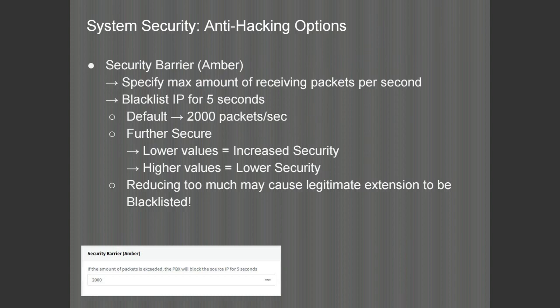Moving on to the amber security barrier, you will be able to define the maximum amount of packets per second coming in from a particular IP to prevent flooding. By default it is 2,000 packets per second, and once this threshold has been exceeded, it will blacklist an IP address for five seconds — this allows for bursts of information to be temporarily blacklisted without permanently affecting the PBX. Increasing the value will lower the security; decreasing the value will increase it. Bringing it too low may cause legitimate extensions to be blacklisted, and it also depends on your network deployment with remote extensions.